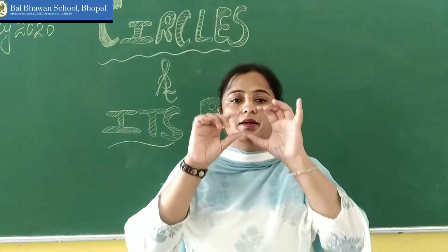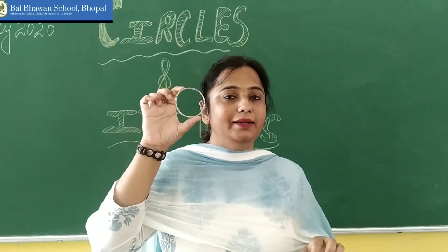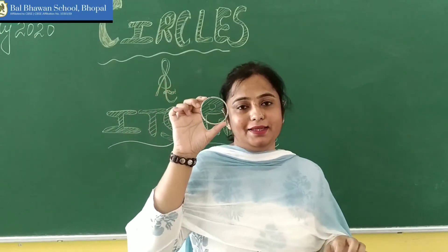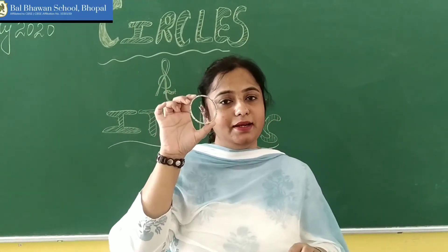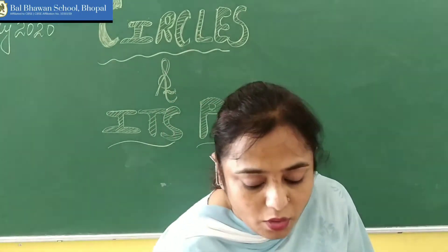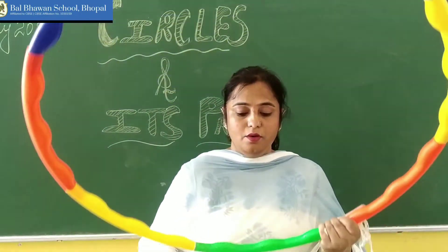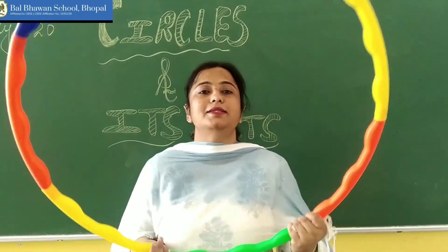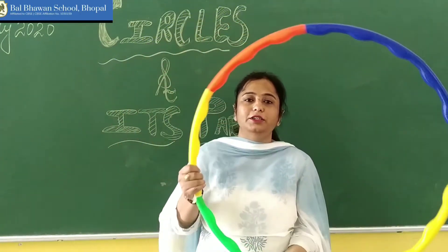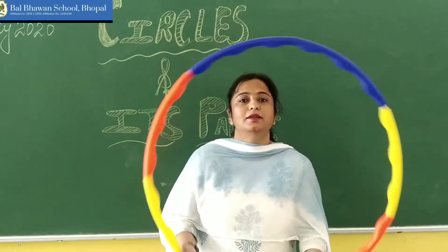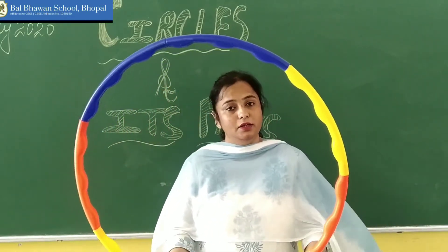See, what is this? This is a bangle. And what shape is it? It is round. Now I will show you a big round. What is this? This is a bangle. And what shape is it? It is a circle.